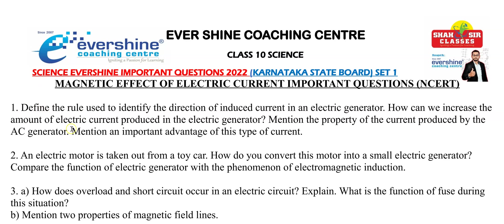The first question: Define the rule used to identify the direction of induced current in an electric generator. How can we increase the amount of electric current produced in the electric generator? Mention the property of the current produced by the AC generator. Mention an important advantage of this type of current.